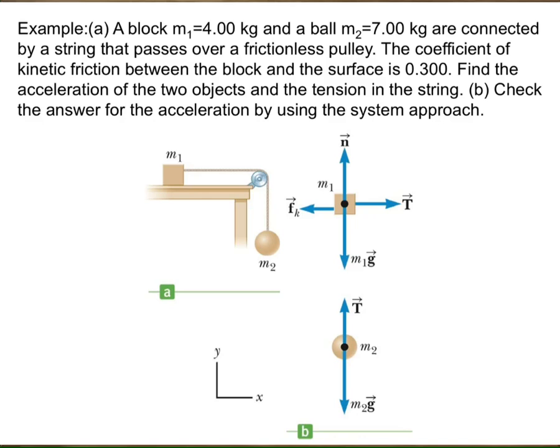We have two masses again, connected by a string that doesn't stretch or expand — it stays the same length. The difference here is that m1 is on the surface, and the surface has friction. M2 is up in the air, so there is no friction for m2. The only forces on m2 are its weight downward and the tension force on the cord. We choose a coordinate system for both masses. After fixing the coordinate system, you draw a free body diagram for each mass — this is very important. Without knowing the forces acting on the bodies, you cannot solve the problem.